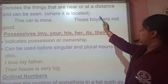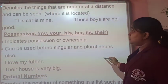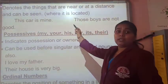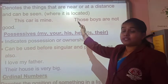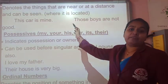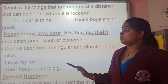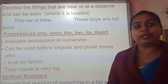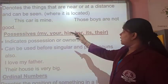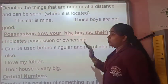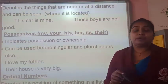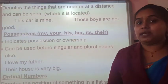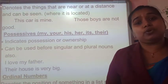Now, demonstrative determiners — these denote things that are near or at a distance that can be seen. The heading may not be visible, but this is the demonstrative determiners section. They denote things by pointing — this or that. For example: 'This car is why most boys are not good.' There are four demonstrative determiners we use: this, that, those, and these.